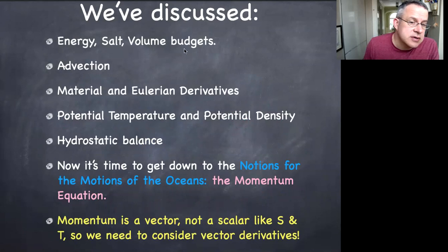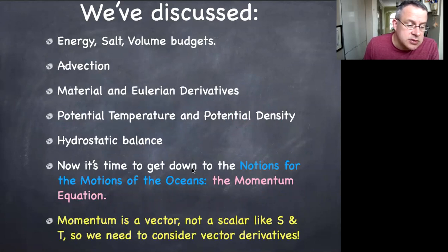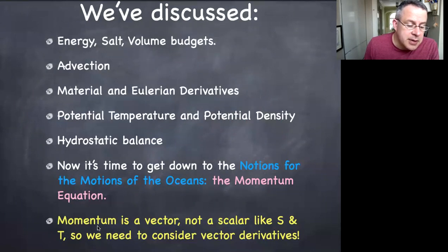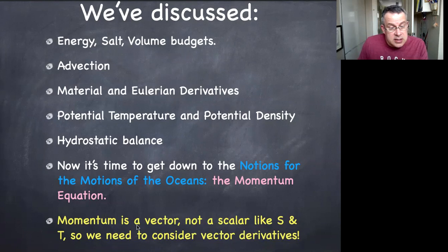We've already discussed energy, salt, and volume budgets — all scalar budgets. We've discussed the advection term, Lagrangian and Eulerian derivatives, potential temperature, density, and hydrostatic balance. Now it's time to get to the notions for the motions of the oceans — real applications of the momentum equation in a setting where motion is occurring. Momentum is a vector, not a scalar like salinity and temperature, so we're going to need to consider vector derivatives. This brings us to a level of mathematical complexity that's a little bit higher.